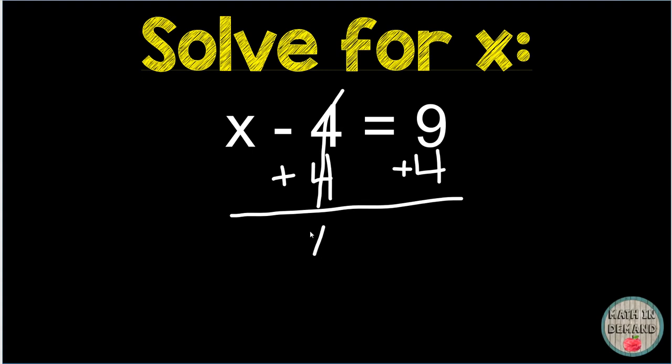I am going to bring down my x, bring down my equals. 9 plus 4 will give me 13. I will check my answer. I will take 13 and plug it in for x. This becomes 13 minus 4 equals 9. 13 minus 4 is 9. 9 equals 9 is a true statement. That is correct.